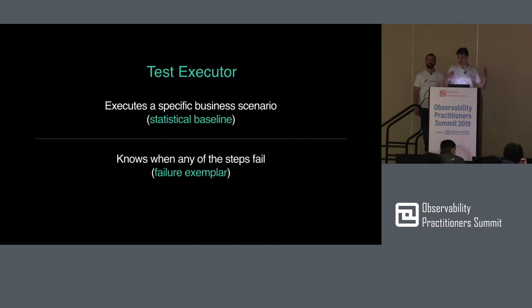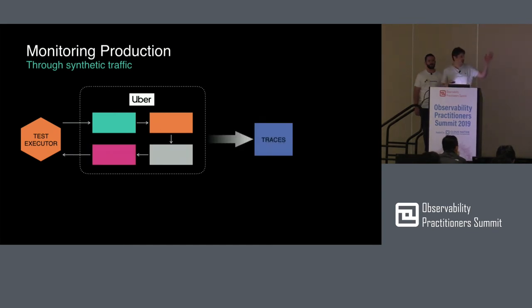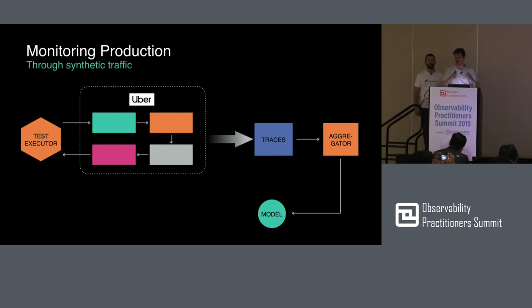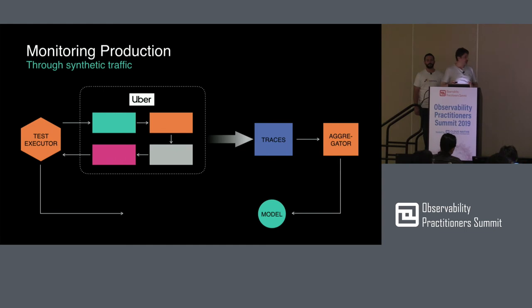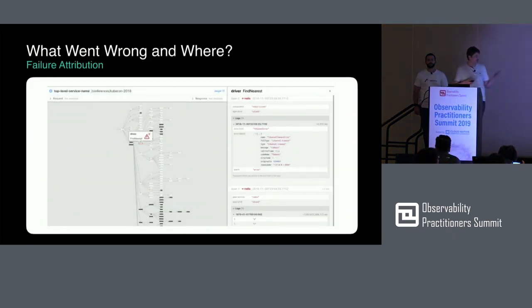Once that alert goes off, we're back to the problem of what to do with 3,000 services. The test executor is tied to tracing because every request it sends is traced — it's synthetic traffic so we can afford to trace all of it. It executes specific business scenarios allowing us to form a baseline, where the baseline for one city may be different from another. When steps fail, it gives us a trace with a clear signal that this is a bad trace. So we have two pieces to compare fully automatically — no human involved in choosing either. We do the diff and let the human investigate only the difference. There is no human choice involved in selecting the pieces to diff.